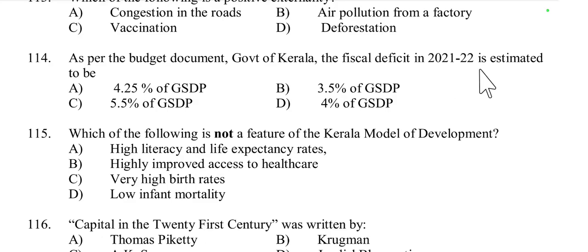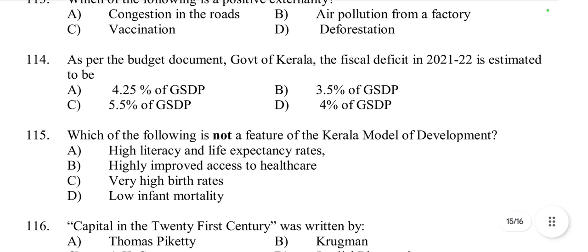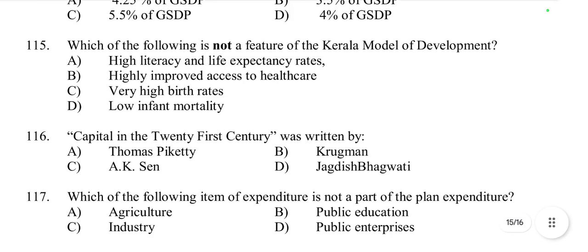Question 114: As per the budget document of the Government of Kerala, the fiscal deficit in 2021-22 is estimated to be nearly 3.5 percent of Gross State Domestic Product.